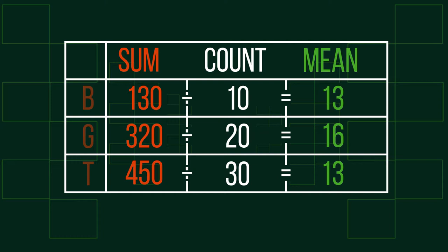Looking at how we tackle this problem will help us see how to reverse it. By putting the values into a table like this, we can use the mean equation to work out the individual means.